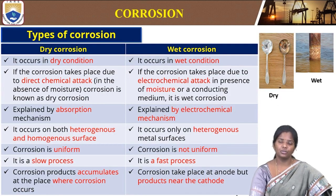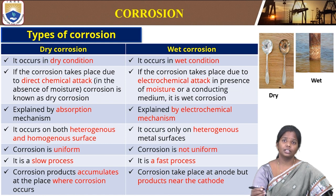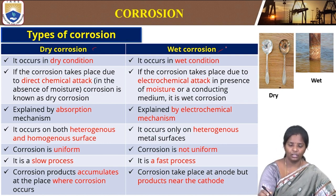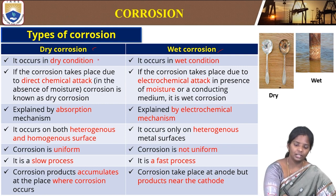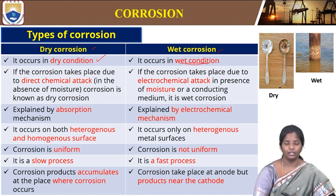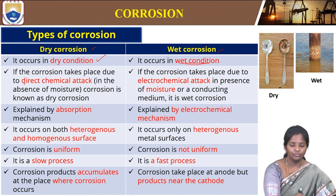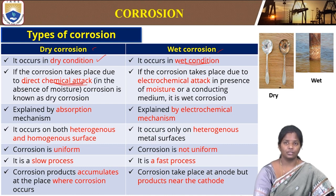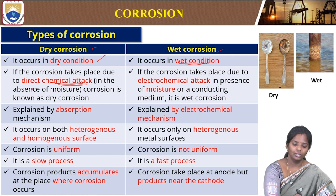There are different types of corrosion. We see corrosion at different conditions, but depending on the condition or the environment, there are two types of corrosion — dry corrosion and wet corrosion. In dry corrosion, it occurs in dry condition due to direct chemical attack with no need of any moisture. The corrosion will occur in direct chemical attack in the absence of moisture — this is known as dry corrosion.